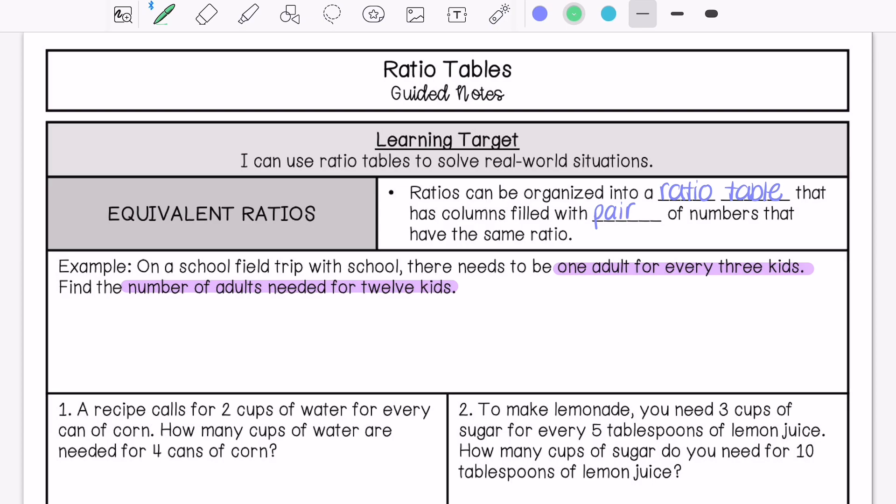We are going to draw a table. We have adults and kids. So one adult for every three kids, two adults for every six kids, three adults for every nine kids, four adults for every 12 kids. So we need four adults.